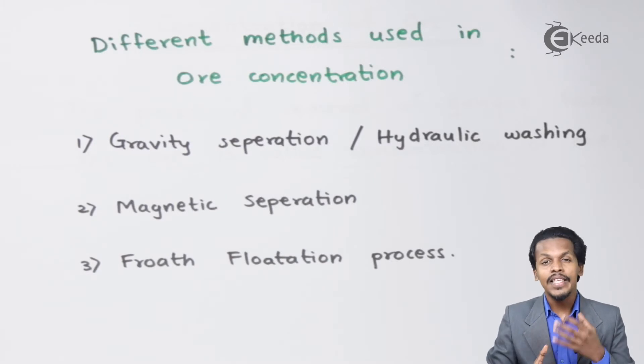In this case, the ores which consist of metal will be attracted towards the magnet, and the rest of the impurity will be away from the magnet. This is how we can separate the ore from impurity. I will talk about this in detail in my next lecture.